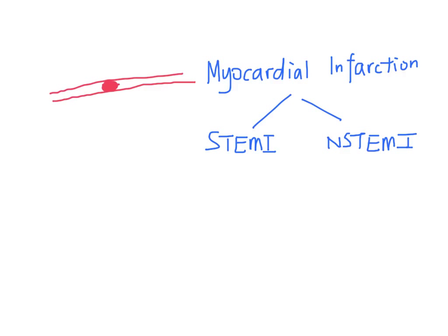ACS also includes ischemia to the myocardium — that is, decreased blood supply to the myocardial cells — that does not lead to myocardial cell death.